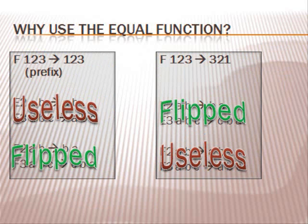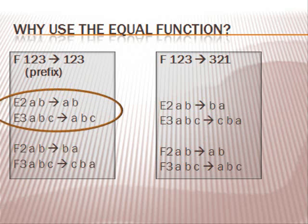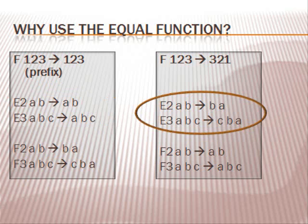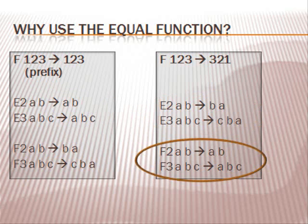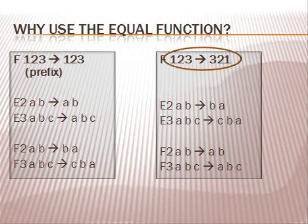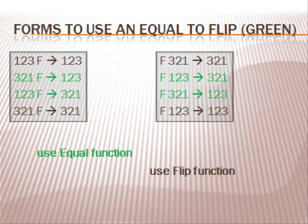Why do we use the equal function? In prefix form, the equal function appears to have no purpose. But in this form, the equal function acts as a flip function, and the flip function acts as an equal function. The form on the right acts this way because the order of its output is opposite the order of its input. Use the equal function to perform a flip when translating into any of the green-colored forms. All equal functions in any of the black forms can be eliminated without hesitation. All flip functions in any of the green forms can be eliminated.